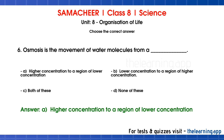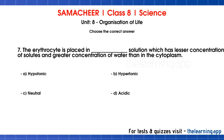Question number 6: Movement from a region of higher concentration to a region of lower concentration. If we have a solute in a solution at higher concentration, it will diffuse to dilute it, so the correct answer is option A. Question number 7: The erythrocyte is placed in a dash solution which has lesser concentration of solutes and greater concentration of water than in the cytoplasm. The correct answer is option A, Hypotonic.